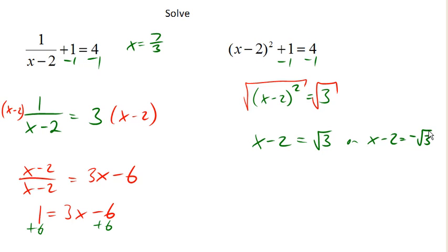Because if it was the negative square root of 3 and we squared it, we would still get 3 because when you square a negative, it becomes positive.